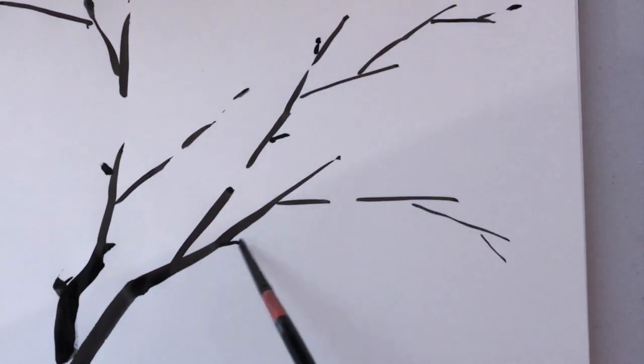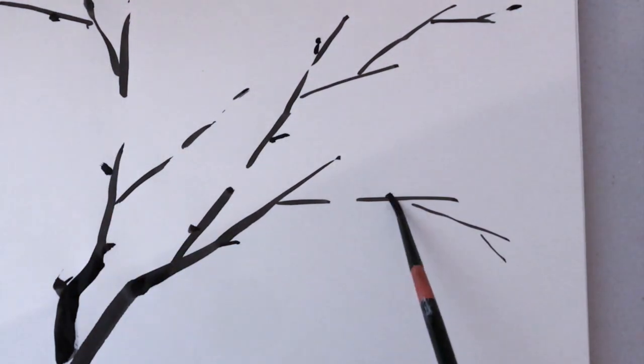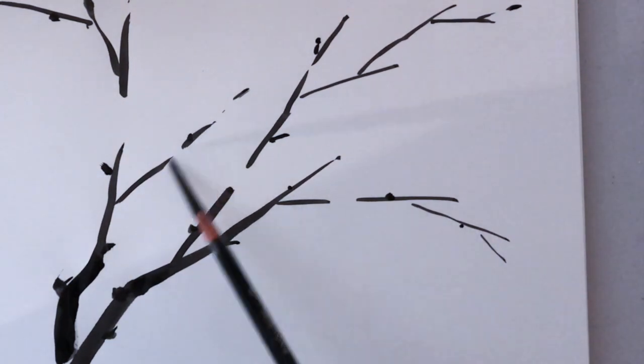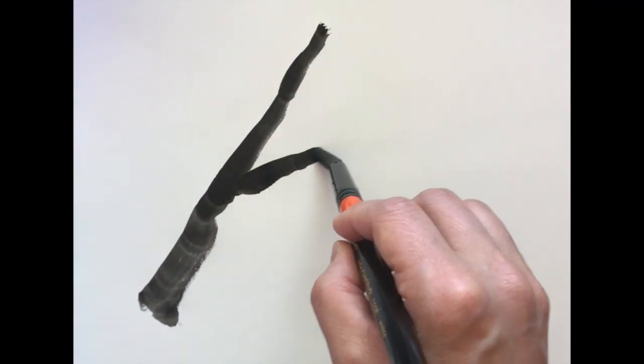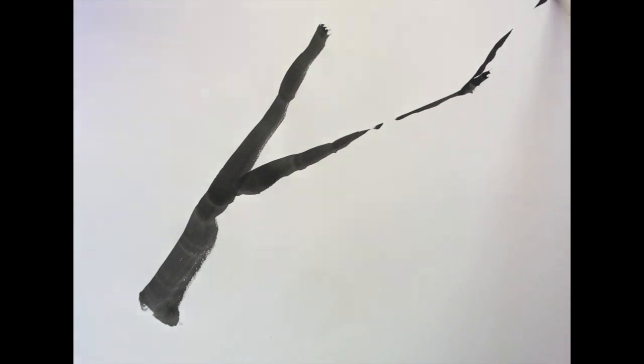Add little knobs, sort of like little bits of the branch that make it kind of look rough. Just keep on practicing branching out. It's really fun.